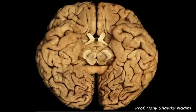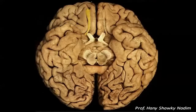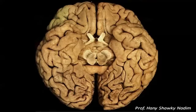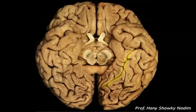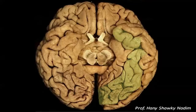Now we will revise the inferior surface of the hemisphere. This is the orbital surface, this is the olfactory sulcus containing the olfactory bulb and tract. This is the gyrus rectus, the occipitotemporal gyrus, and the lateral occipitotemporal gyrus.